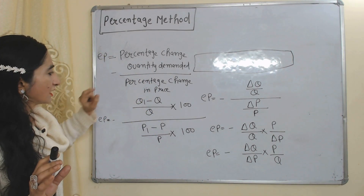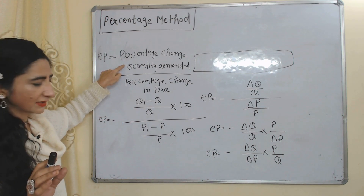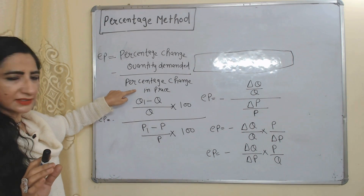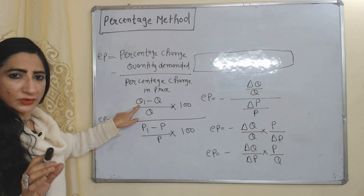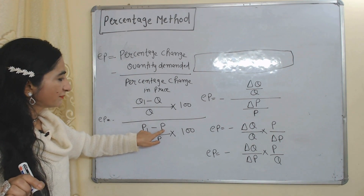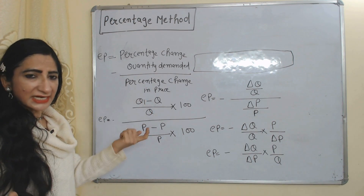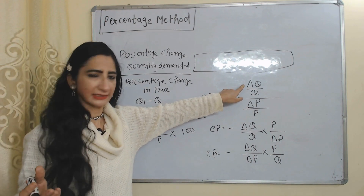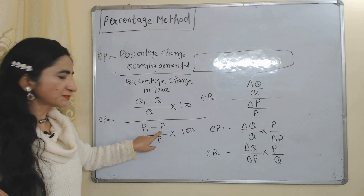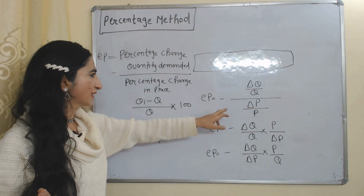In place of percentage change in quantity demanded, we can replace this with the formula to calculate percentage change in quantity demanded. Similarly, in place of percentage change in price, we can replace it with the formula to calculate percentage change in price. Here Q1 means new demand, Q means original or old demand. Similarly, P1 means new price and P means original or old price. Q1 minus Q represents change, so we represent it with Delta Q. Similarly, P1 minus P represents change, so we represent it with Delta P.